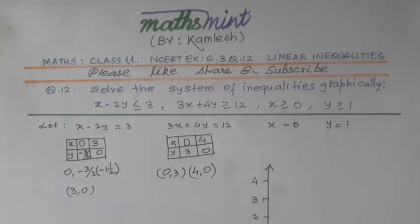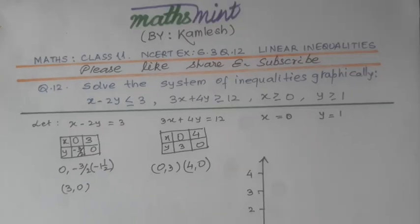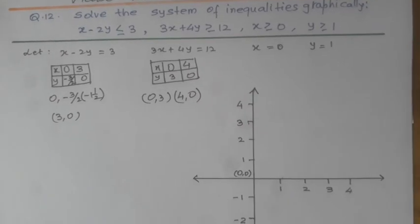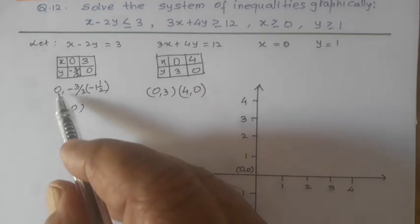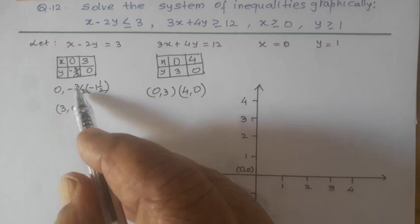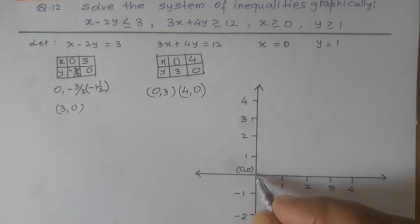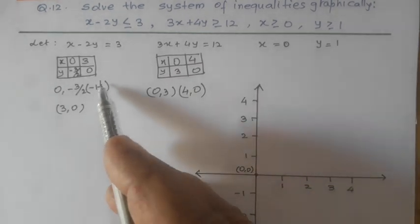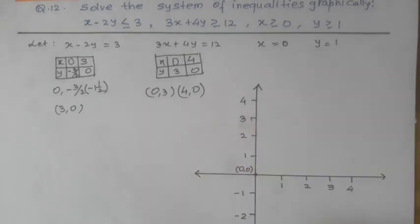Now, we shall draw it on the graph. Here, 0 comma minus 3 by 2. 0 is here, minus 1 and 1 by 2. 1 is here, 1 by 2 is here. So, this is the point.